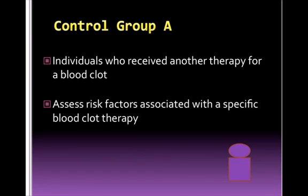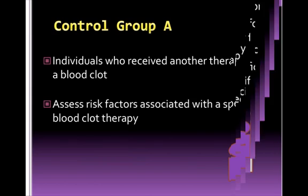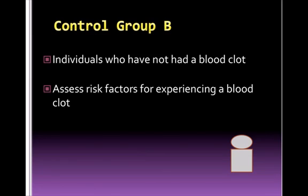Control group A includes subjects that have received another type of therapy for a blood clot. These types of subjects would be selected if the objective of the study was to assess risk factors associated with a specific blood clot therapy in patients who have experienced a blood clot. Control group B includes subjects that have not had a blood clot. These types of subjects would be selected if the objective of the study was to assess risk factors for developing a blood clot.